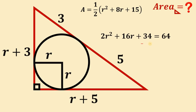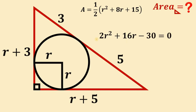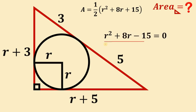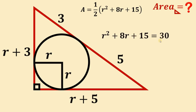Let's equate this to zero by subtracting 64 from both sides, so 34 minus 64 gives negative 30. We get 2R squared plus 16R minus 30 equals 0. Since all terms are multiples of 2, we divide all coefficients by 2, giving R squared plus 8R minus 15 equals 0. This is close to the expression we want — the only difference is we need positive 15. So let's add 30 to both sides: positive 30 minus 15 gives positive 15, and we get R squared plus 8R plus 15 equals 30.